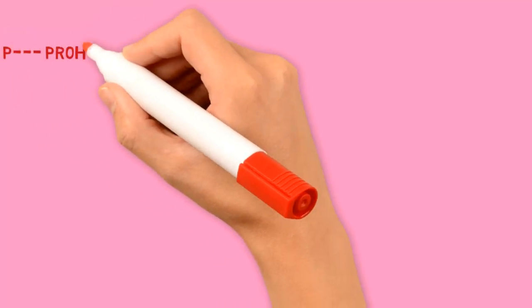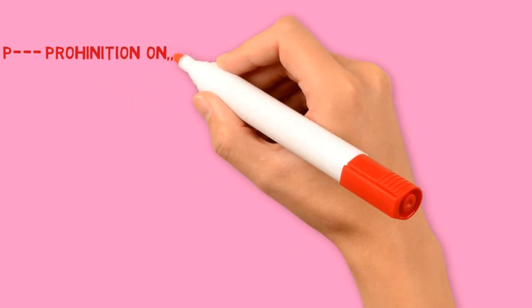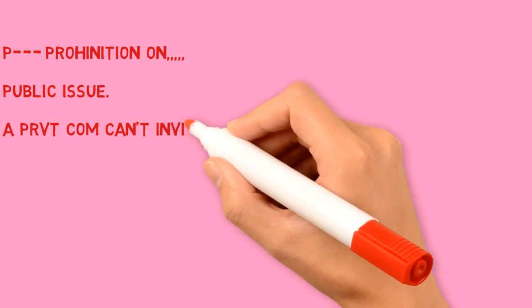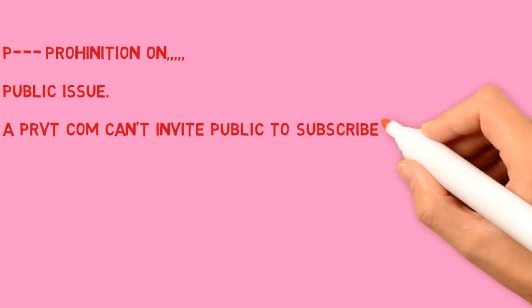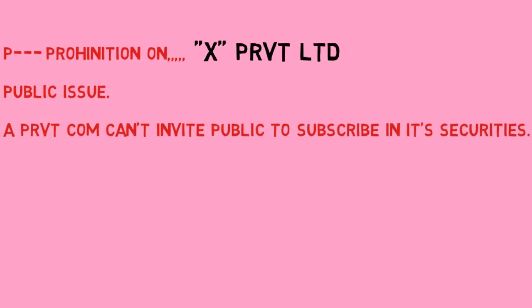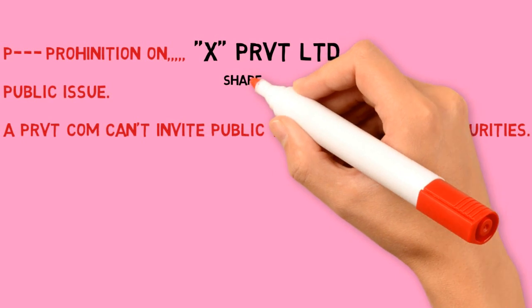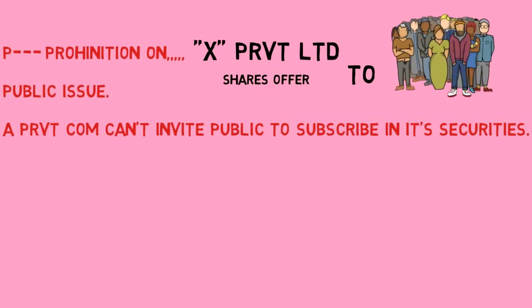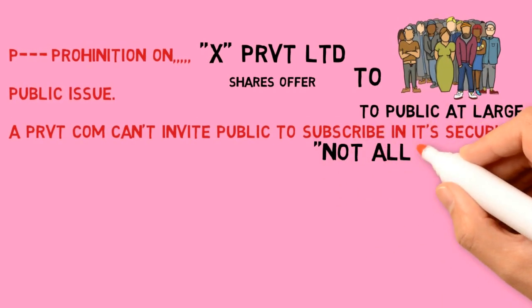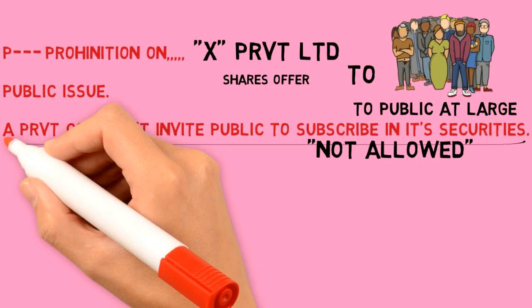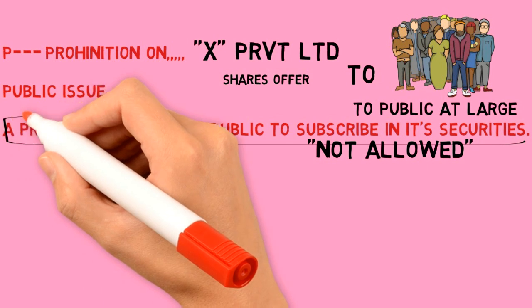P stands for Prohibition — prohibition on public issue. A private company cannot invite the public to subscribe to its securities. For example, XYZ Private Limited wants to offer its shares to the public at large. This is also not allowed. A private company cannot invite the public to subscribe to its securities.